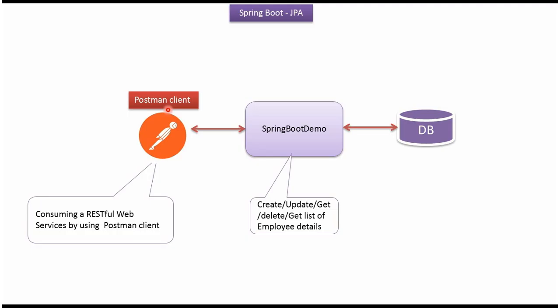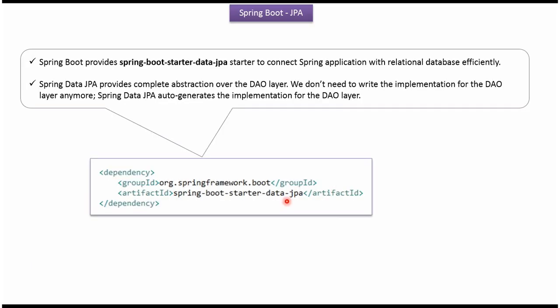Here you can see the Postman client. Using the Postman client we can consume the web services exposed by the Spring Boot demo application. To integrate JPA into the Spring Boot application we have to include the dependency spring-boot-starter-data-jpa. Using this JPA we can connect the Spring Boot application with a relational database efficiently. Spring Data JPA provides complete abstraction over the DAO layer, so we do not need to write the implementation for the DAO layer — Spring Data JPA auto-generates it.